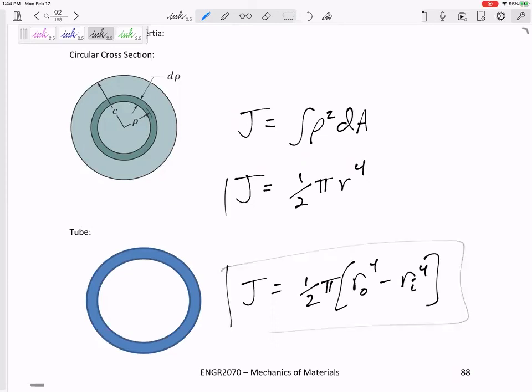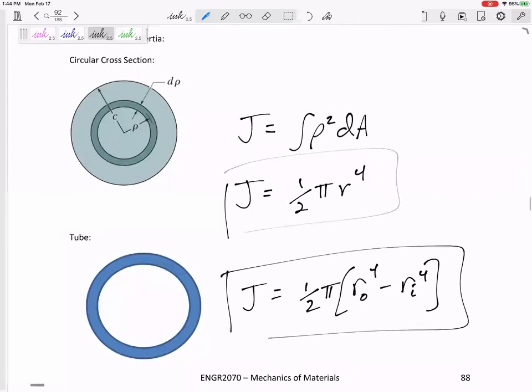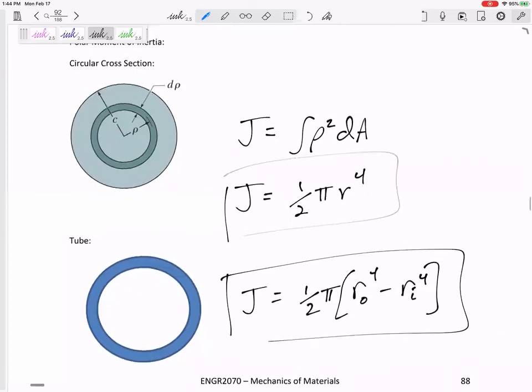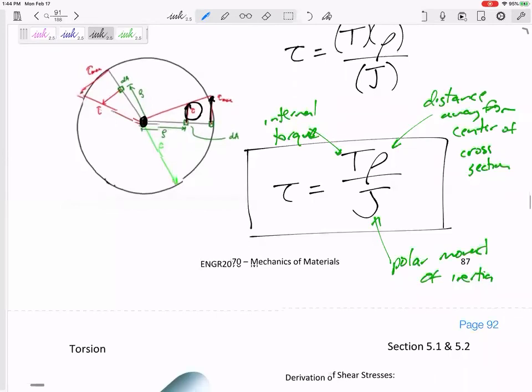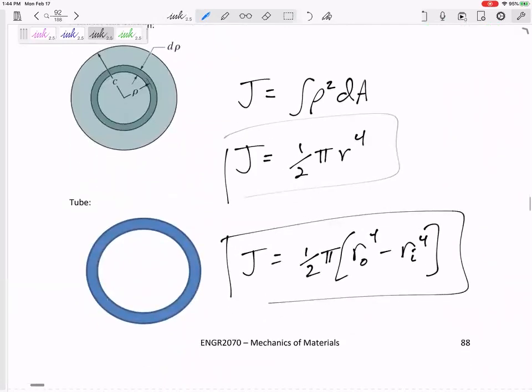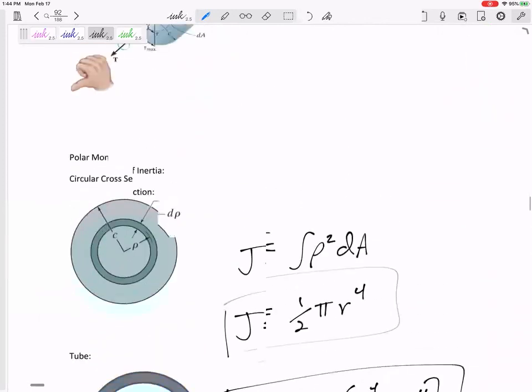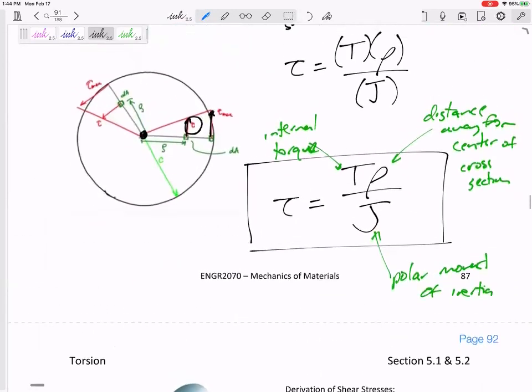Let's just simplify it down to that. The stress, the shear stress caused by torque, TR over J, and I might even say R over J, but this is how far you are away over J. And the J is one half pi R to the fourth.